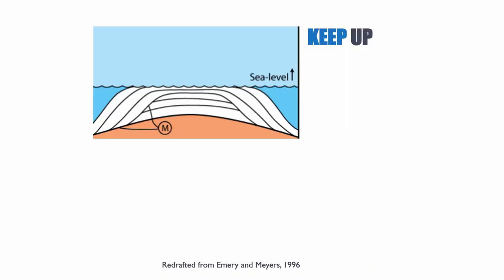Then there comes a point where sea level stops rising or still rises but at a much slower pace, and we are in the so-called keep-up phase. The population growth is such that they can fill all of the accommodation — they keep up with new accommodation being created. What happens is they produce so much sediment that it needs to be exported laterally, so not only does the system aggrade, it progrades as well.